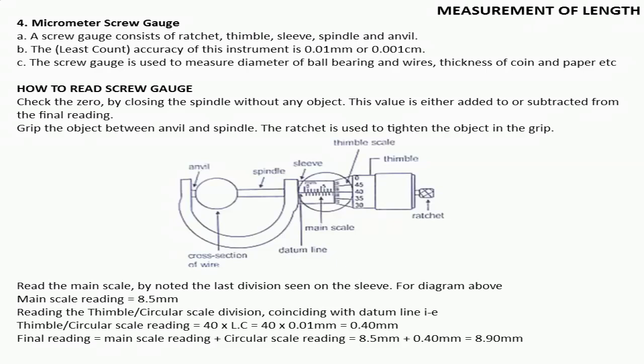Reading the thimble or circular scale division coincided with the datum line. The datum line is the horizontal line on the main scale. The horizontal line is coincided with the circular scale. So the thimble or circular scale reading is 40 divisions, because the reading is taken in divisions. Now this 40 division will be multiplied with the least count, and the least count of micrometer screw gauge is 0.01 millimeter, and the reading is 0.40 millimeter.